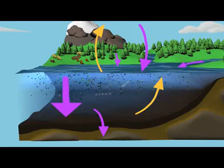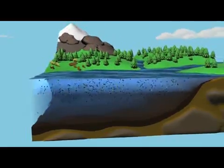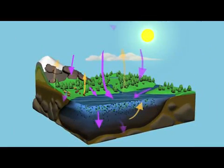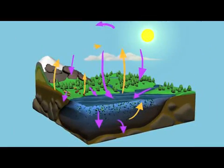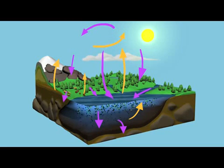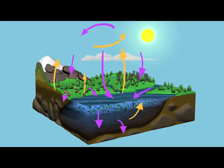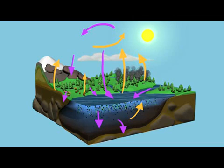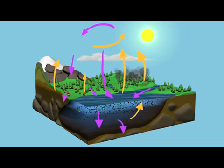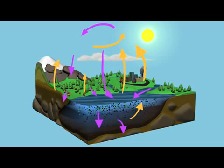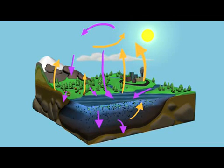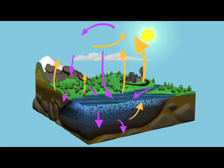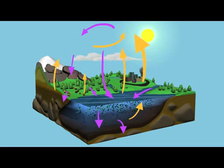Sometimes phytoplankton die, decompose, and are recycled in the surface waters. Phytoplankton can also sink to the bottom of the ocean where they become buried in marine sediment. Over long timescales, this process has made the ocean floor the largest reservoir of carbon on the planet. In a process called upwelling, currents bring cold water containing carbon up to the surface, and as the water warms, carbon is released.